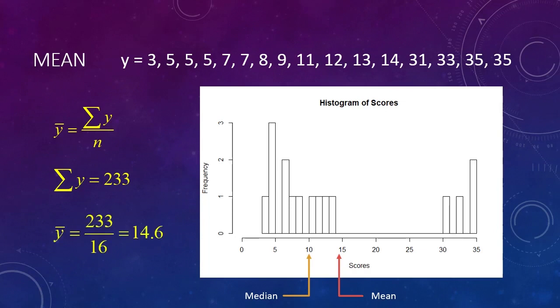So, I've done that too. The mean of this set of scores is 14.6. We can also say that the mean of the distribution, which is pictured here in this histogram, is 14.6.